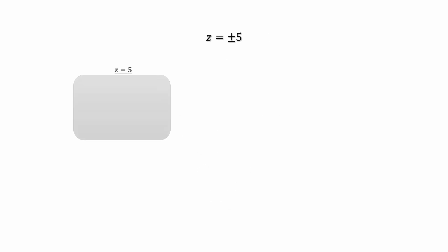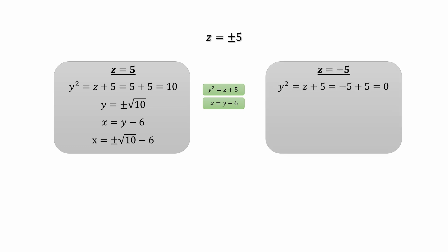Finally, by substituting these values back, we first calculate the corresponding y values and then find the relevant x values using the previously defined relationships. Hence, the final answers are x = -6 or x = ±√10 - 6.